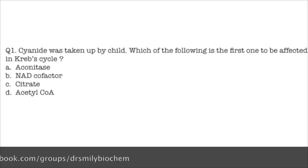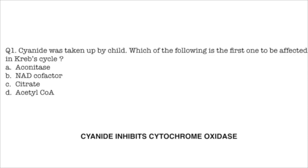In this question they are asking you the effect of cyanide on TCA cycle. Cyanide directly does not affect TCA cycle. So this is a tricky question. We only know only one thing about cyanide: that cyanide inhibits cytochrome oxidase, that is complex 4 of ETC. So in cyanide poisoning ETC is affected.